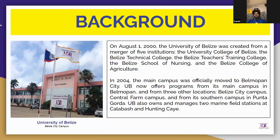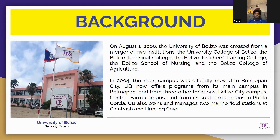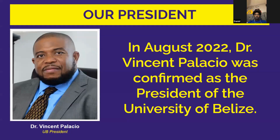Before we begin, we need to know the background about UB and how it came about. On August 1st, 2000, the University of Belize was created from a merger of five institutions: the University College of Belize, the Belize Technical College, the Belize Teachers Training College, the Belize School of Nursing, and the Belize College of Agriculture. In 2004, the main campus was officially moved to Belmopan City. UB now offers programs from its main campus and three other locations — Belize City, Central Farm, and the southern campus in Punta Gorda. UB also owns and manages two marine field stations at Calabash and Hunting Quay.